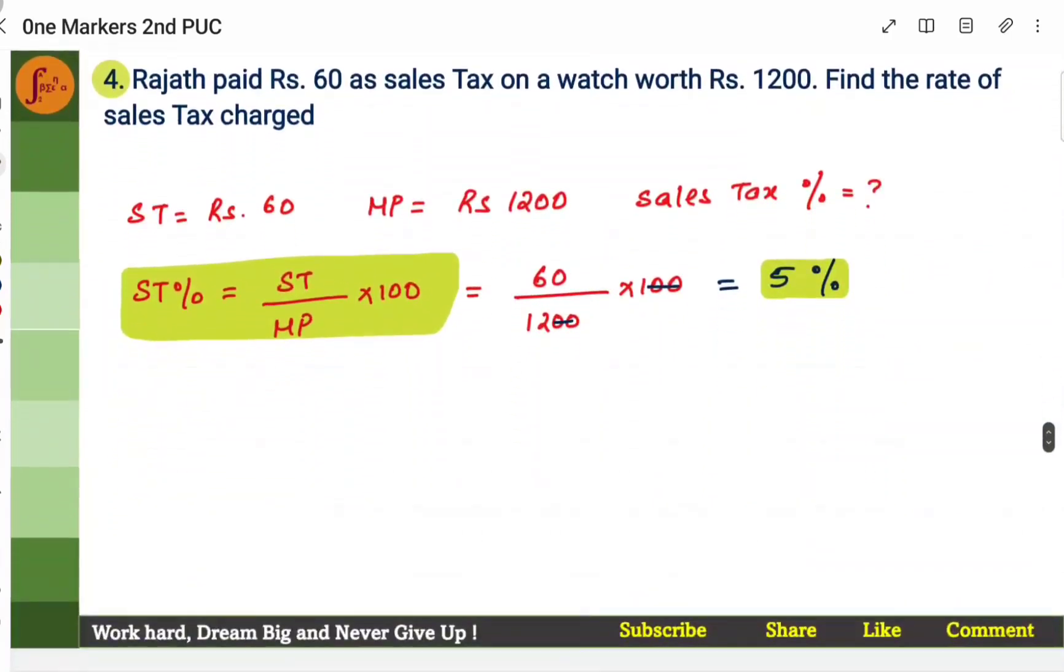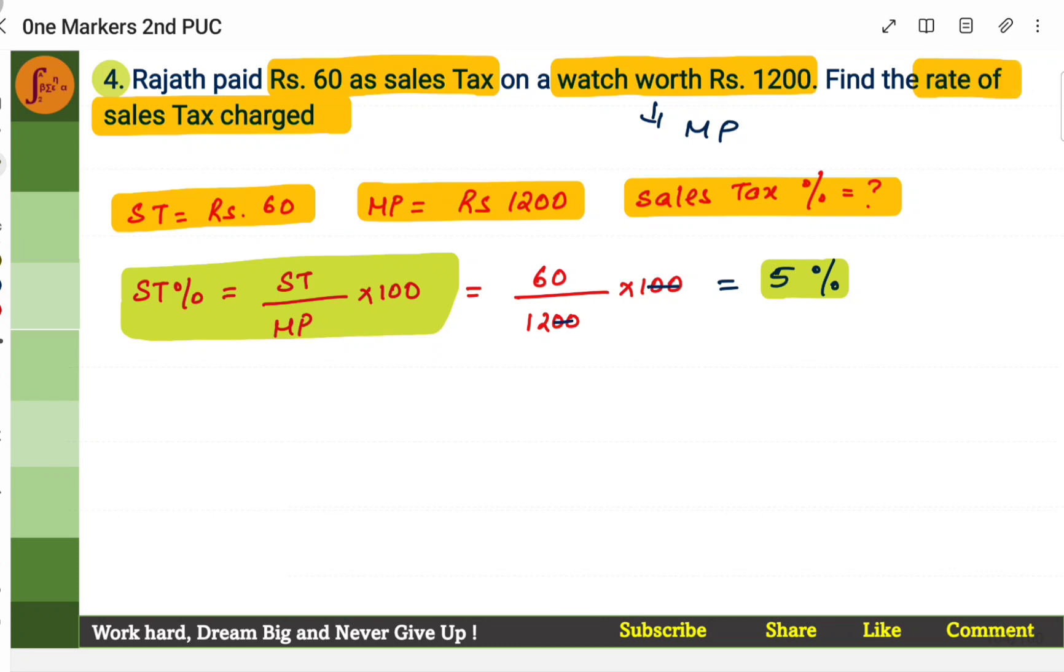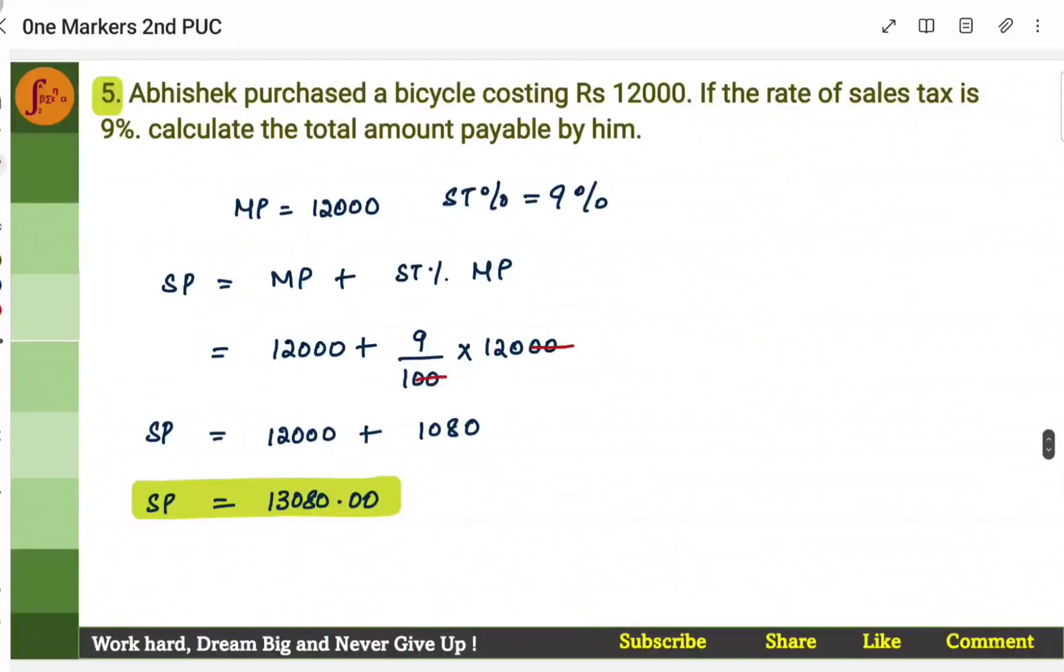Let's go to the next problem. Rajat paid Rs. 60 as sales tax on a watch worth Rs. 1200. Find the rate of sales tax charged. So he pays Rs. 60 as sales tax. So sales tax is Rs. 60. Sales tax is Rs. 60. Watch is worth Rs. 1200. That means this is marked price. This is marked price of the watch. So marked price of the watch is Rs. 1200. Now you need to calculate the sales tax percent. Find the rate of sales tax charged. Rate means percentage. Rate means percentage. So sales tax percent. Formula is sales tax percent is sales tax by marked price into 100. So direct substitution and you get 5% as the answer.